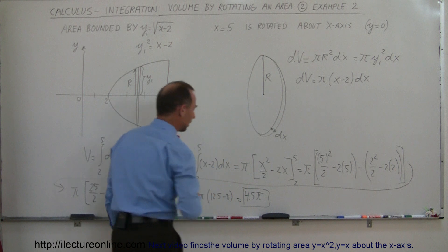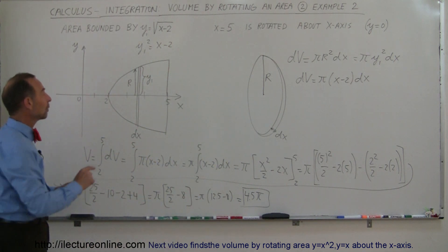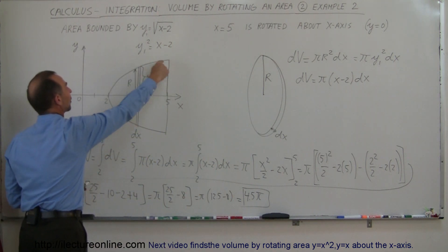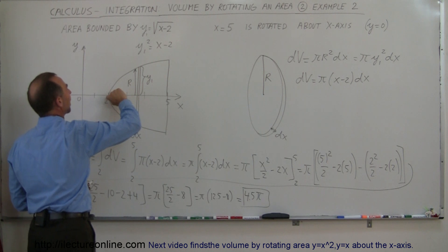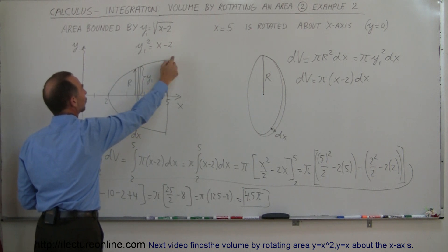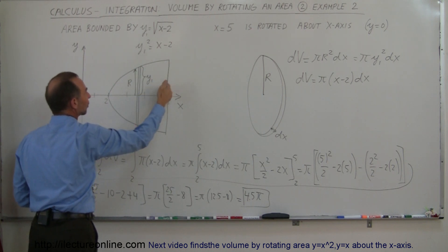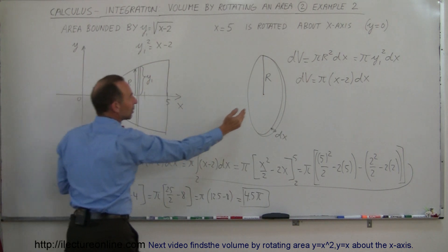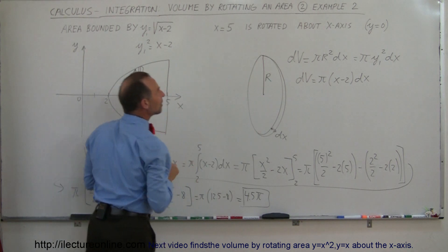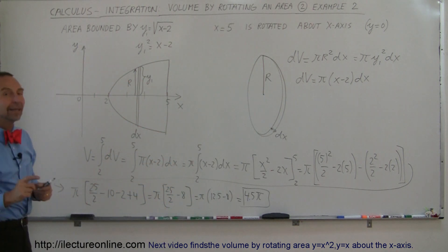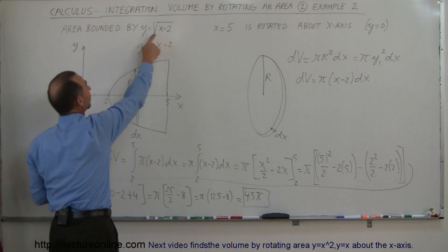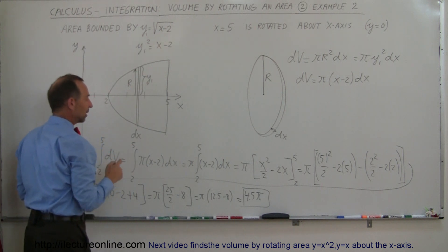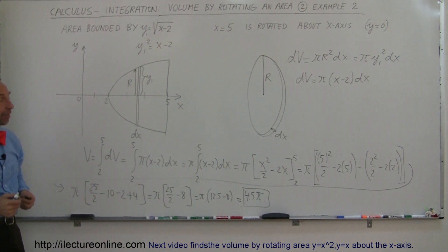That would be the volume of that object created when we take this piece right here, which is defined by y equals the square root of x minus 2, and at the end, x equals 5. Take this and rotate it around, then take a slice of it. Here's my little slice. I find my dv in terms of y, then I replace y by what y is equal to, which is square root of x minus 2, and then I go ahead and integrate. That's how we do that.